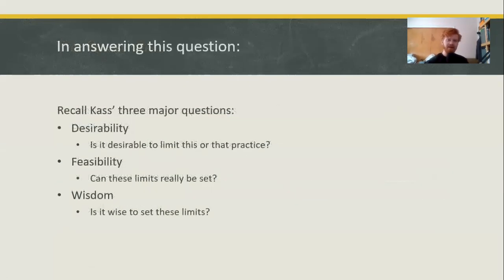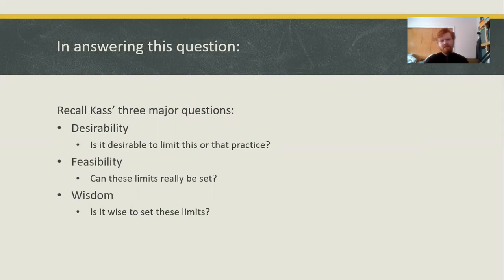In answering these questions, we might want to consider Cass's three major questions. First: what is desirable about this practice? Second: what is desirable about limiting it? — because there are reasons the practice you might want to limit could also be desirable to undertake, and reasons why it might be desirable to prevent it. Third: feasibility — can you realistically set limits on this, or is it something you just can't stop? And then wisdom: is it wise to set limits on something, and why?